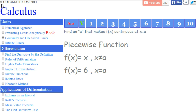It does say Copyright, oh boy. Find an a that makes f of x continuous at x equals a. We have a piecewise function, and here it is. Let's move over to the whiteboard, and let's figure this out.